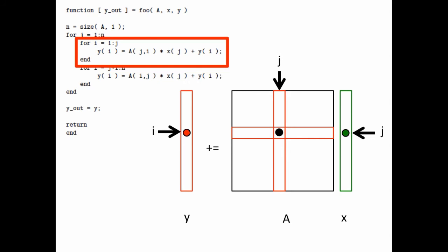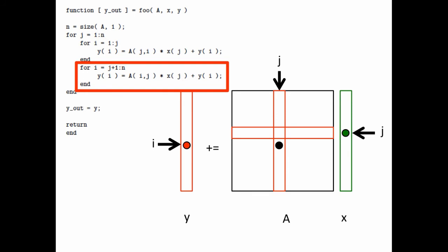Then we hit the diagonal. That's when i is equal to j. And we switch to this loop and we march through the rest of the elements.